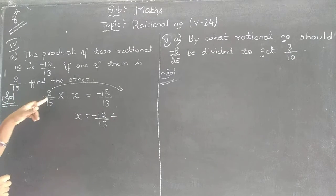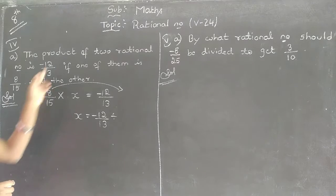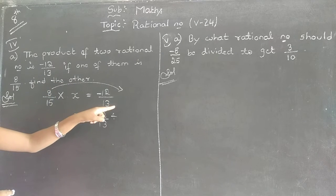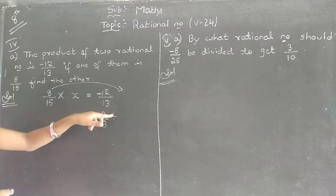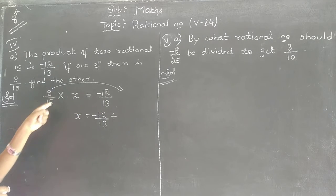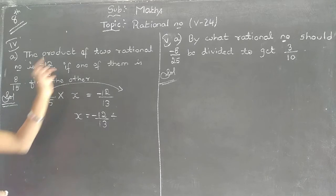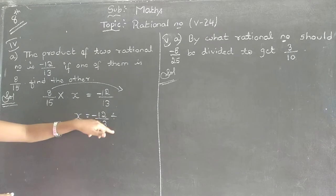If there is plus sign in this side, if it is sent to the RHS, it will become minus. If there is minus, when it is sent to the RHS, it will become plus. Similarly, if there is into, if I shift to the RHS, it will become divided by. If there is divided by, if I shift to the right hand side, it will become into.